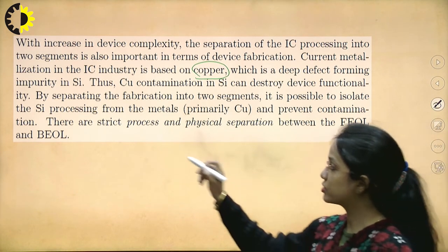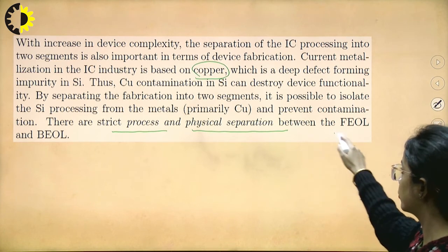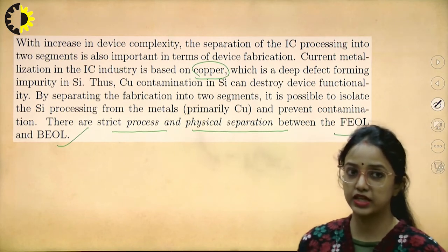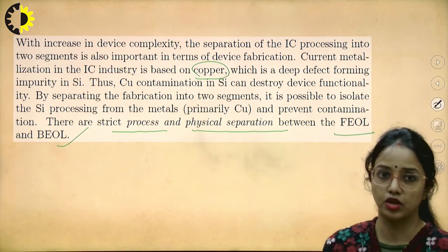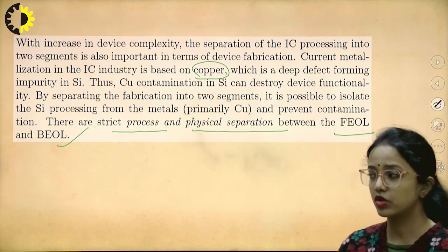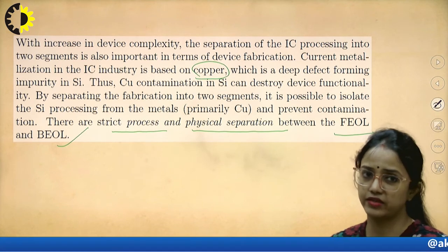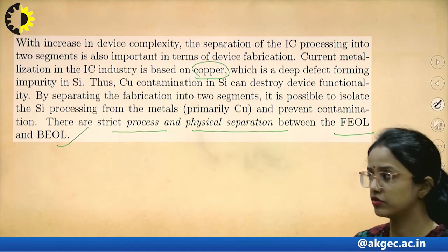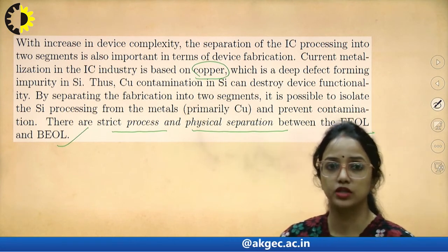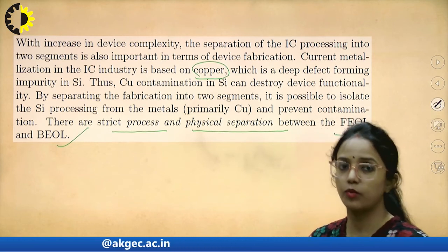There are strict processes and physical separation between copper and silicon. Adding metal and going for metallization increases device complexity, because it means creating separation and insulation between the metal and the semiconductor, and all that complexity gets increased.